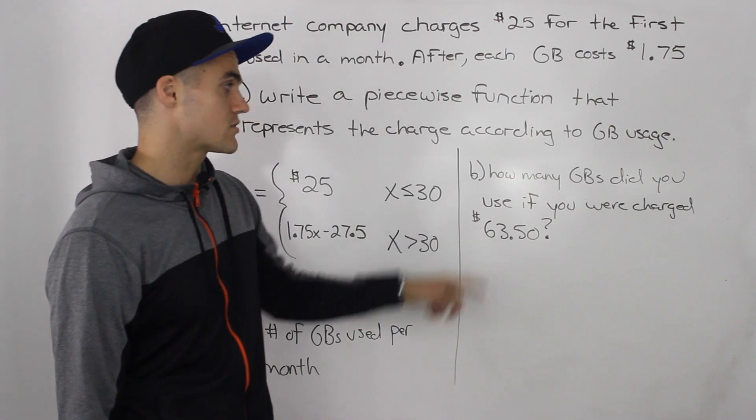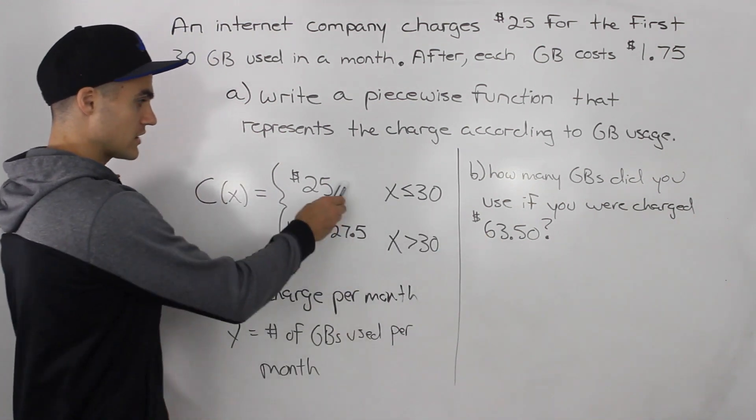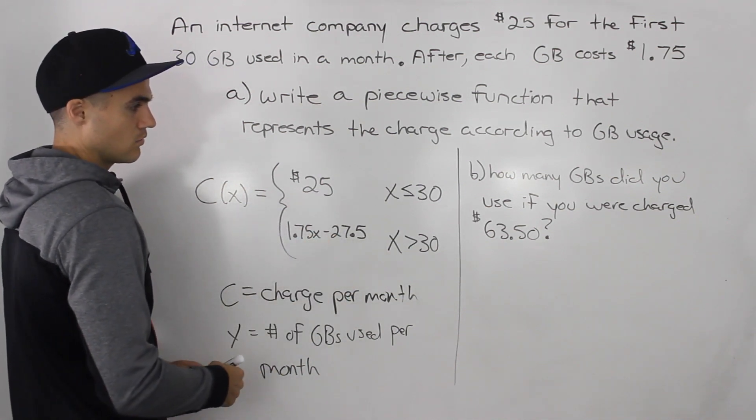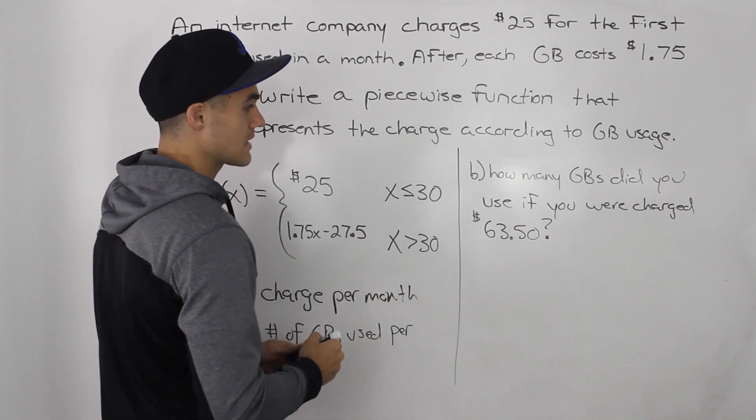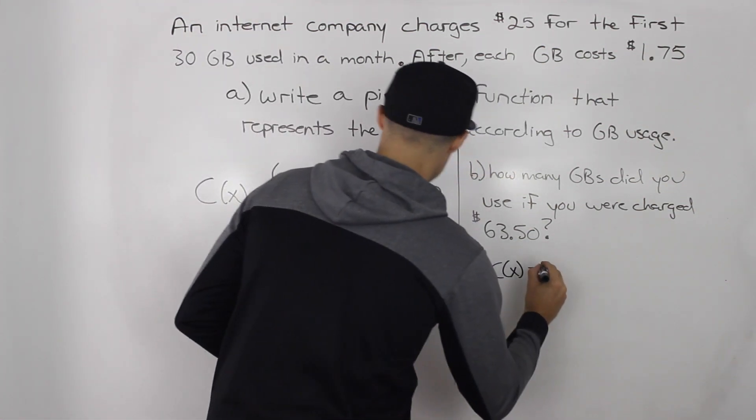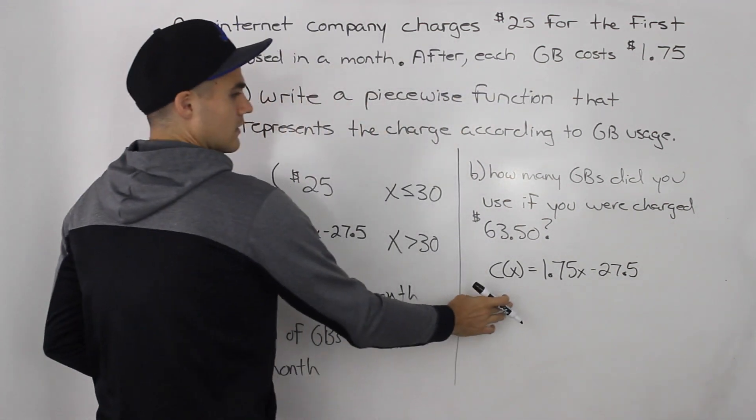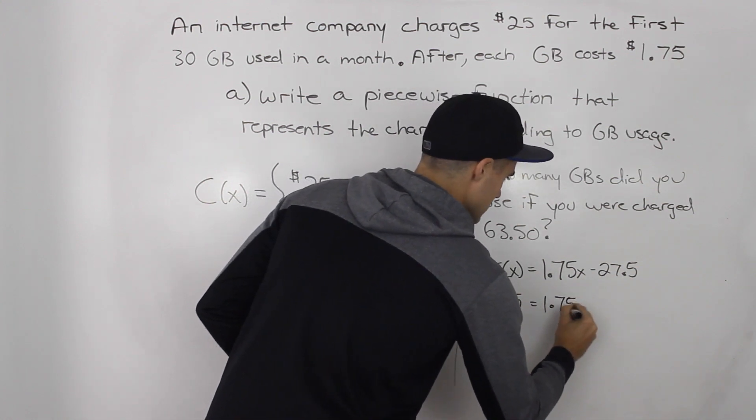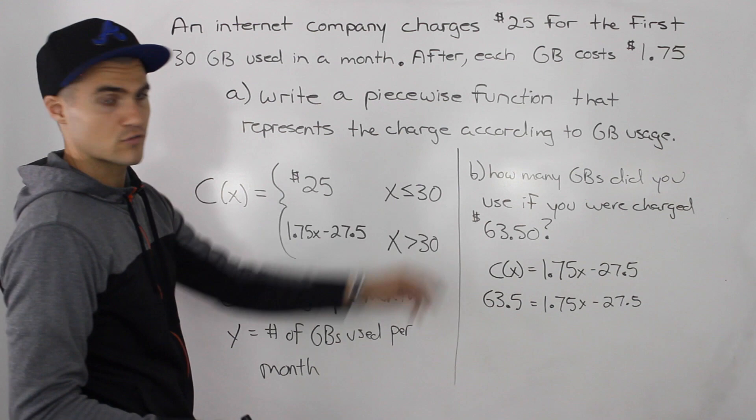How many gigabytes did you use if you were charged $63.50 in the month? So first thing to realize, if we were charged $63.50, which leg would we be using? Well, obviously we're getting charged more than $25. So we know we're going to be using this leg. So we know that the number of gigabytes is definitely going to be over 30, but we have to find the exact amount of gigabytes that we use. So what we do is we take our charge function. So C of X equals 1.75 X minus 27.5. And we make that function equal to 63.5. And we solve for X, where X represents the number of gigabytes we use per month, which is what we are solving for in this question.